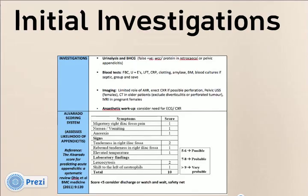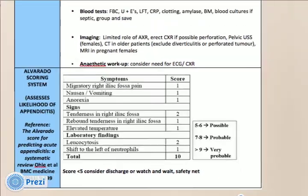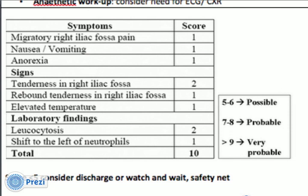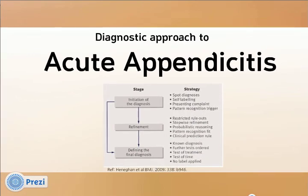Following the examination are the initial investigations: urinalysis, beta-HCG, baseline bloods including CRP, blood cultures if the patient is septic, and group and save. During this process of history, examination, and initial investigation, attention is paid to the Alvarado score — an example of a clinical prediction rule, which is another strategy used in refining clinical diagnoses.